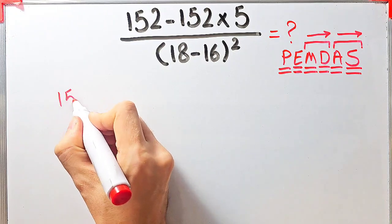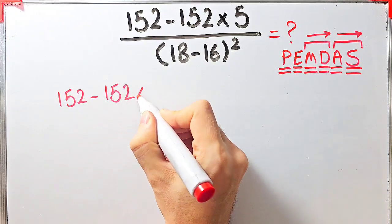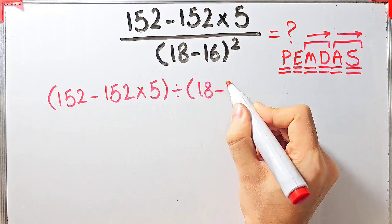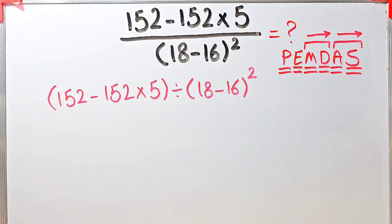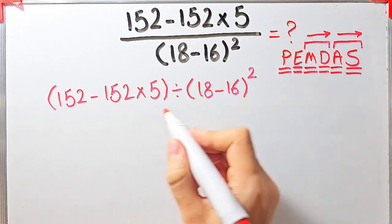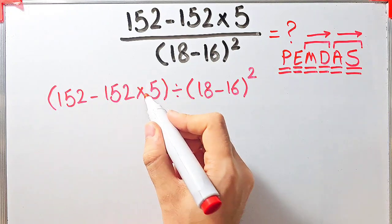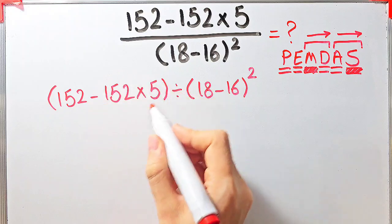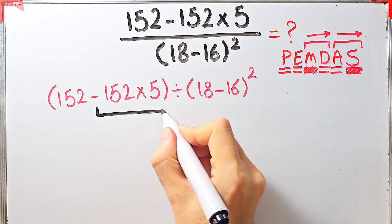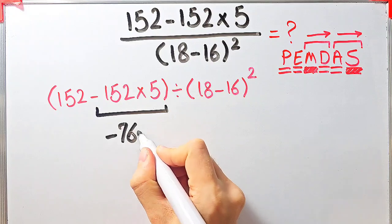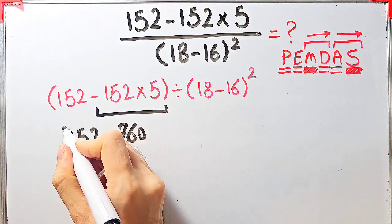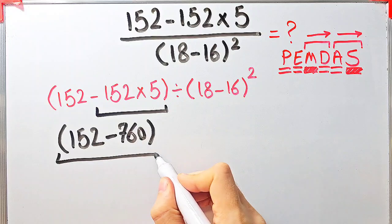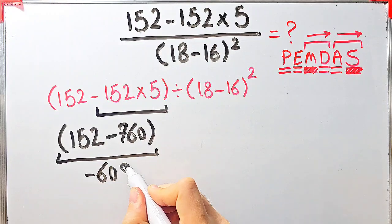We have 152 minus 152 times 5, divided by open parentheses 18 minus 16 close parentheses, all to the power of 2. According to the PEMDAS rule, first we simplify the parentheses. Inside the first parentheses we have subtraction and multiplication. Multiplication has higher priority than subtraction, so first we simplify: negative 152 times 5 equals negative 760. Now we have 152 minus 760. 152 minus 760 equals negative 608, so the parentheses equal negative 608.